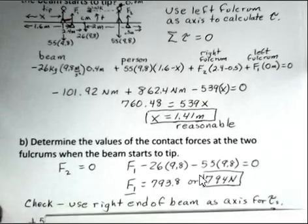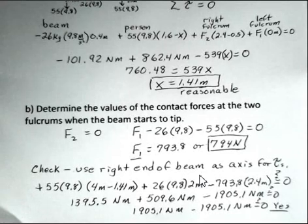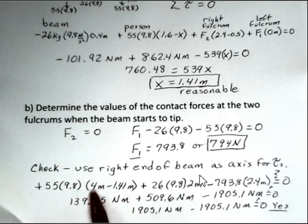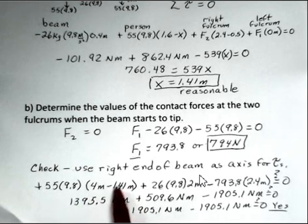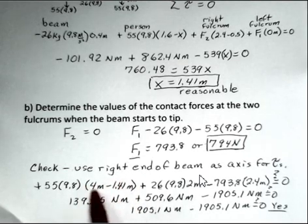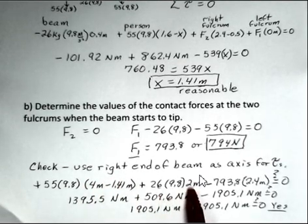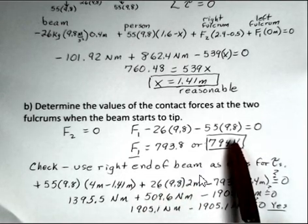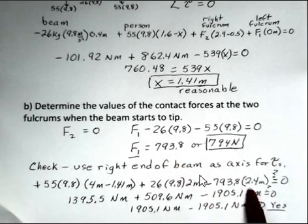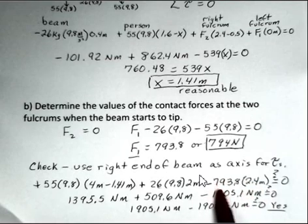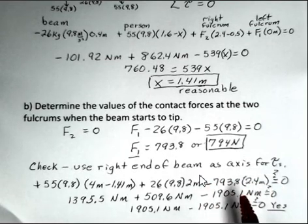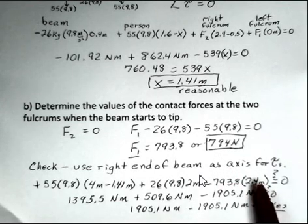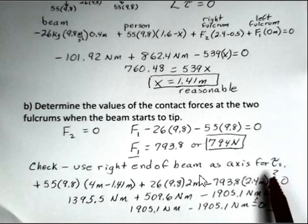We can go a little further and just check to see if we've done this correctly. In calculating the torques, you can use any point in the problem as the axis of rotation. So I'm going to use the right end of the beam as the axis for the torques. So the person, 55, 9.8, and 4 meters is the length, minus 1.41. This will be the distance from the right end of the beam. And then the center mass of the beam is 2 meters from the right end. And then we have the, I unrounded it here from looking at my calculator. I prefer to use numbers that are not rounded off inside a calculation. So we have the F1 force, and that fulcrum is 2.4 meters from the right end.